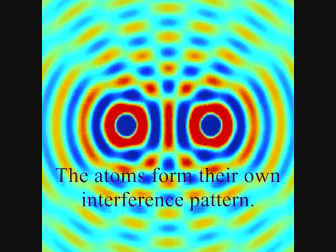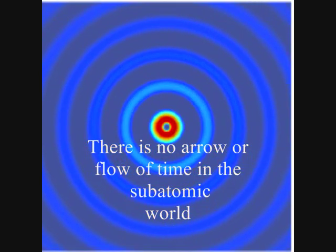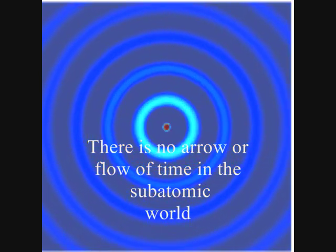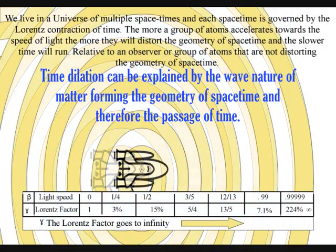But when we zoom in on an individual atom, we find time-independent quantum mechanics, and there is no flow or arrow of time, and all we have is the measurement problem.